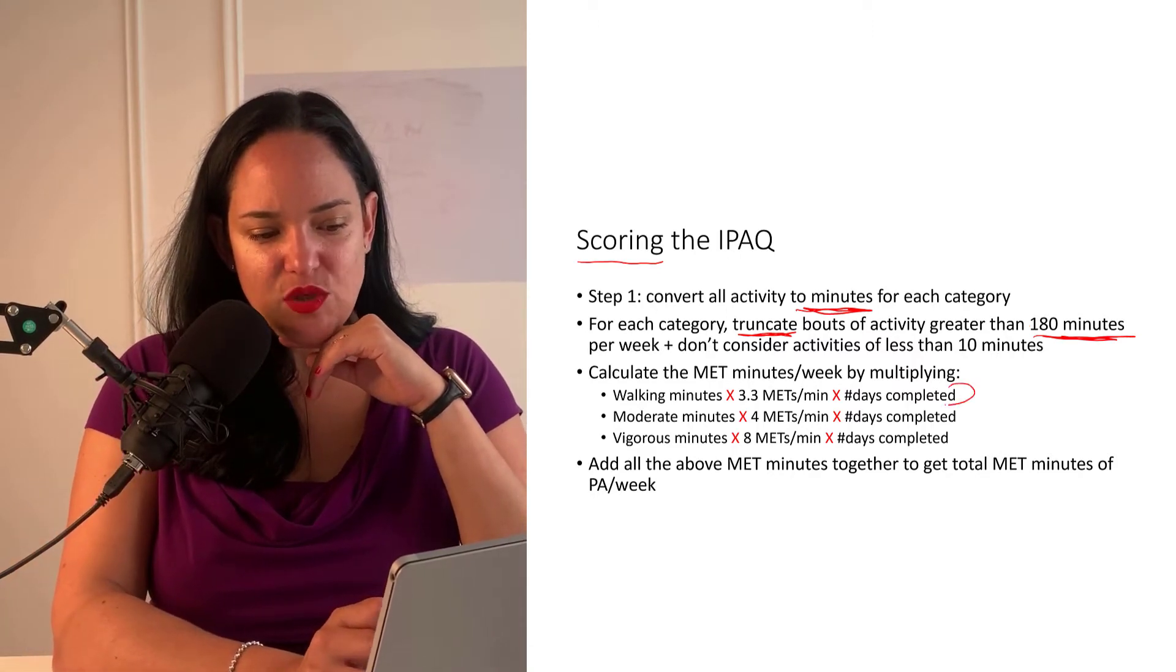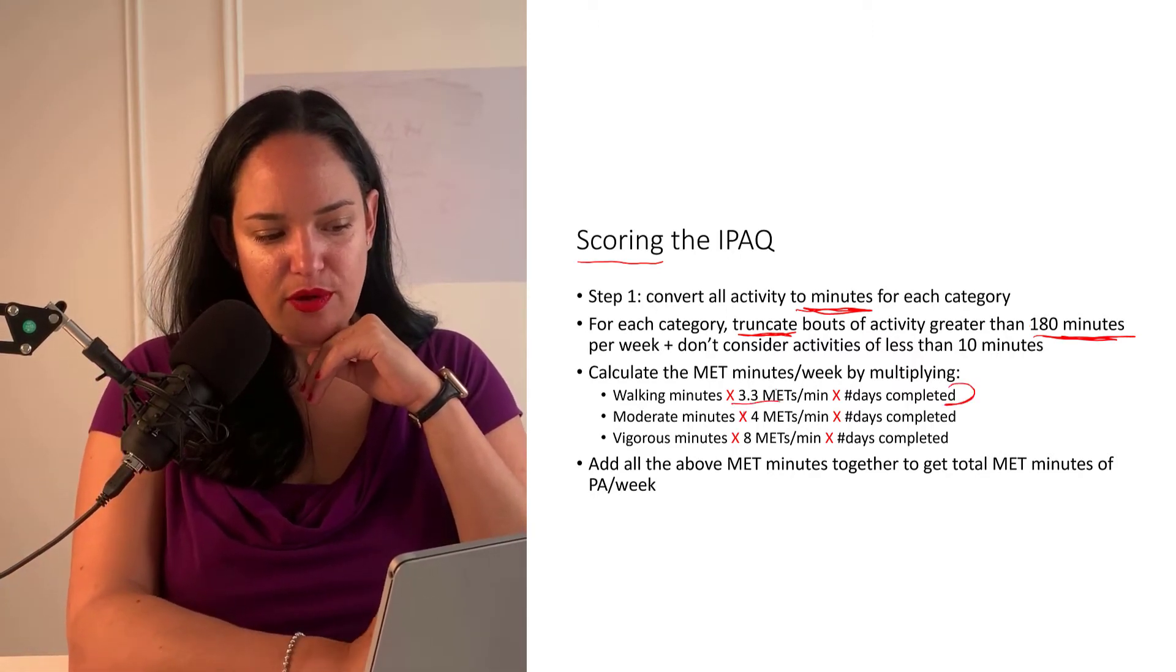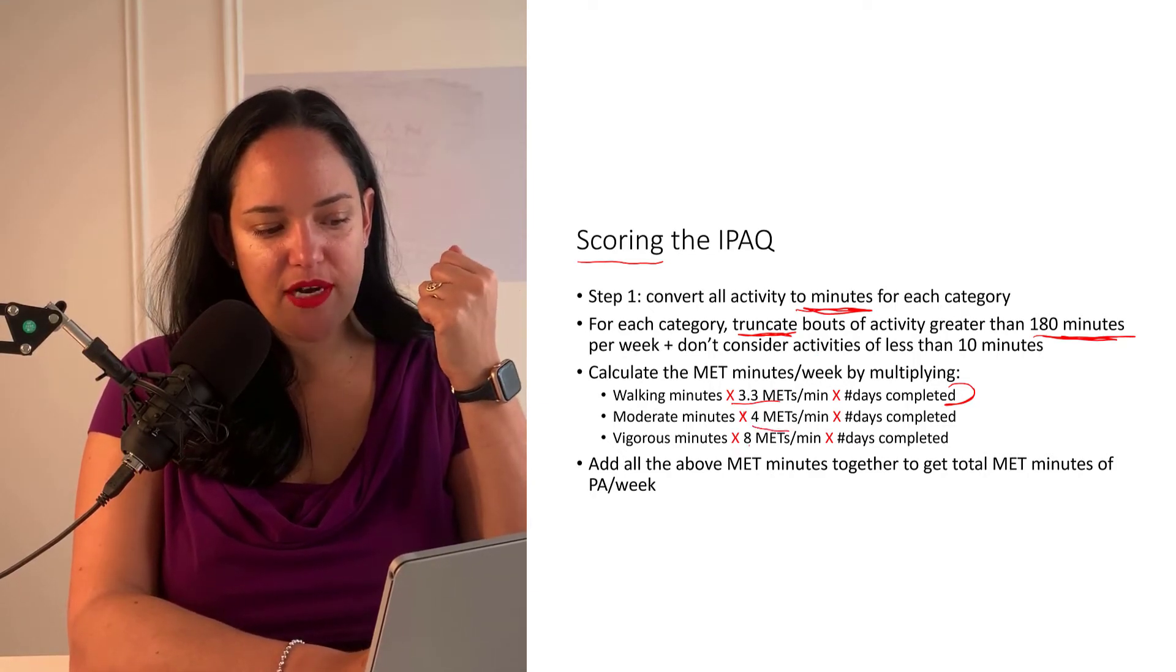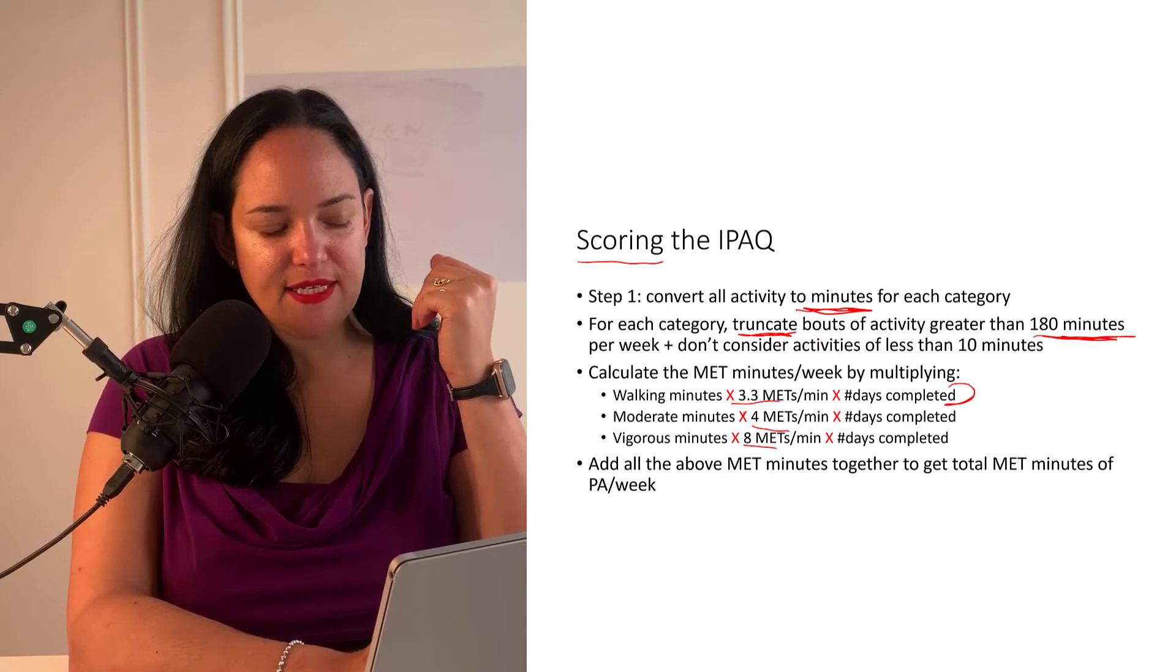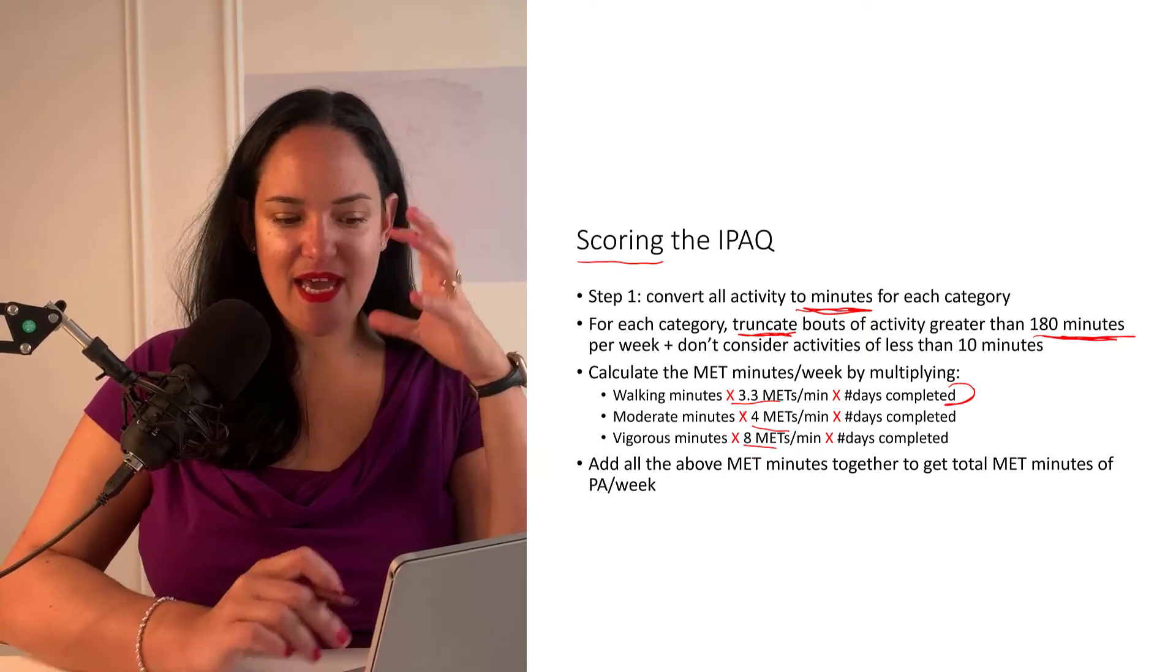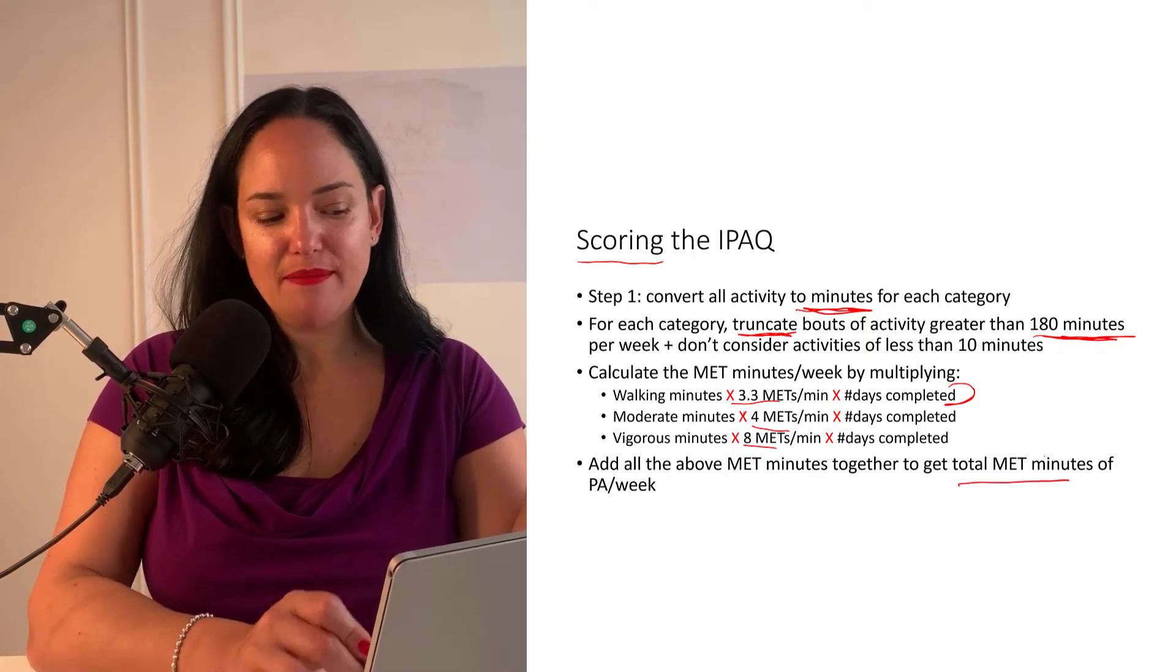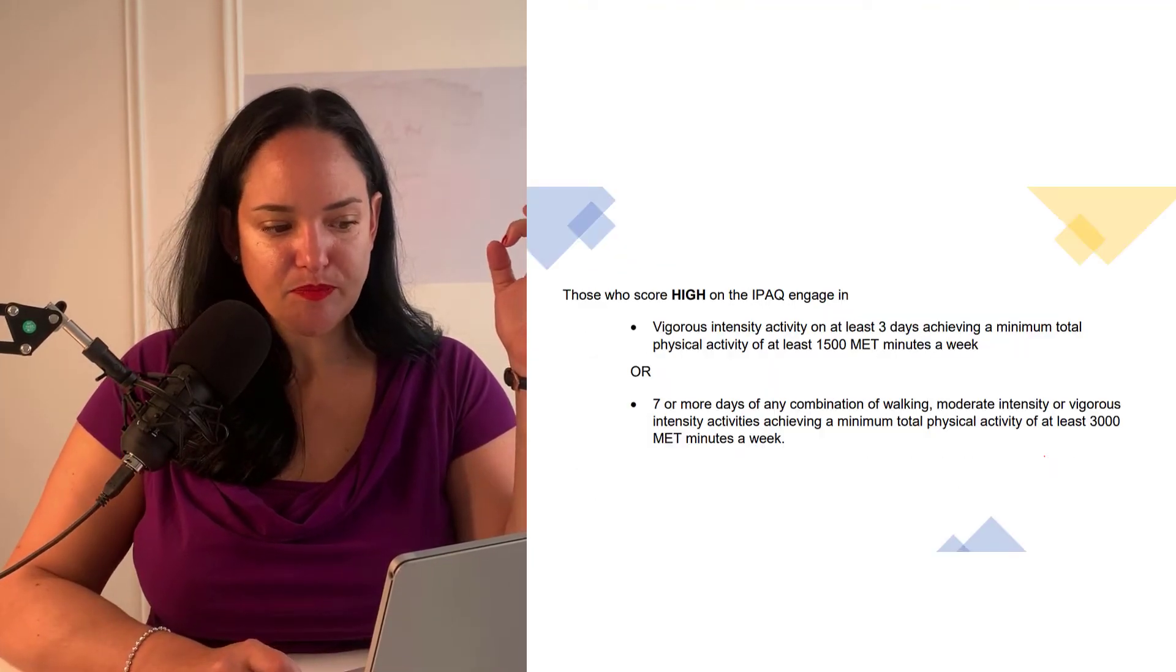So with your walking minutes, what you do is you're going to times them by 3.3 METs and the amount of days that they completed it, moderate activities by four METs and vigorous minutes by eight METs. And then you kind of add all of those up to get a total MET minutes of physical activity per week.